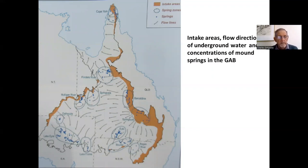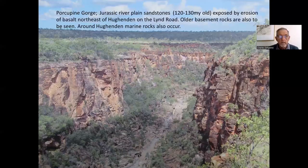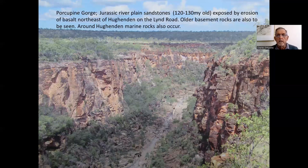Here is another diagram showing the intake areas in brown with flow directions and the spring areas outlined by dots. Shallow waters were available in many areas of the Channel Country. Porcupine Gorge north of Huwenden has some of the older riverplain sandstones, about 130 million years old, and they underlie a basalt cover on the road up to the north of Huwenden. Around Huwenden, marine rocks also occur, so it's possible to find ichthyosaurs or marine reptiles as well as land-dwelling dinosaurs in other areas.